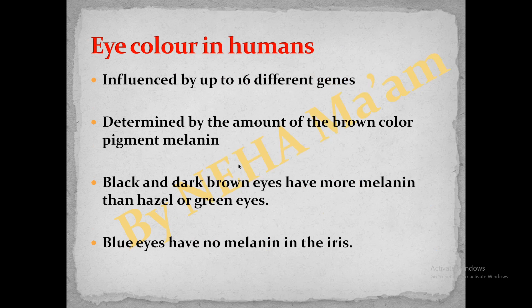Another important example is eye color in humans. It was shown that human eye color is determined by up to 16 different genes having two alleles each, and it is also determined by the same pigment — melanin. Black and dark brown eyes are due to more melanin in the iris, compared to green or hazel eyes, and blue eyes are known to have no melanin in the iris. The number of dominant alleles determines the amount of melanin pigment in eye color.